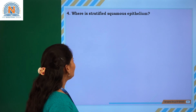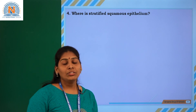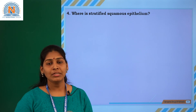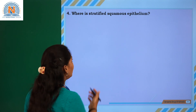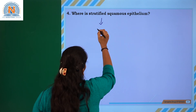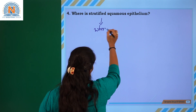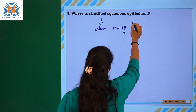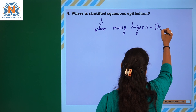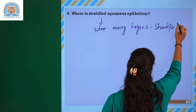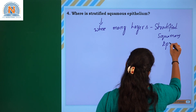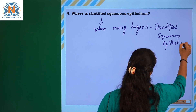The next question is: where will stratified squamous epithelium be found? Stratified squamous epithelium is present wherever there are many layers of cells. Wherever multiple layers are present, we can find stratified squamous epithelial tissue.